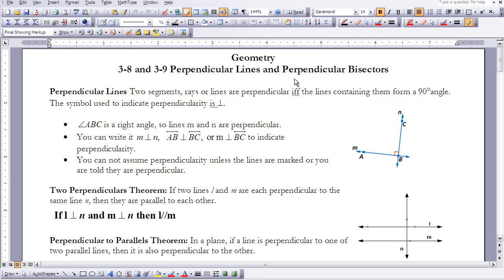Two segments, rays, or lines are perpendicular IFF, if and only if, the lines containing them form a 90 degree angle. The symbol that we use for perpendicularity is this upside down T.